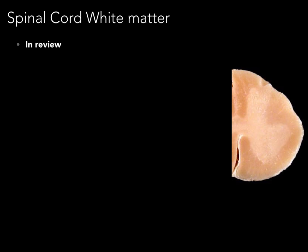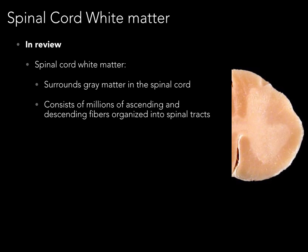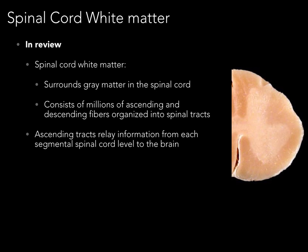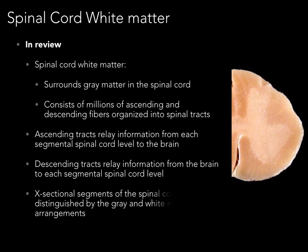In review: spinal cord white matter surrounds the gray matter in the spinal cord. It consists of millions of ascending and descending fibers organized into spinal tracts. Ascending tracts relay information from each segmental spinal cord level to the brain, and descending tracts relay information from the brain to each segmental spinal cord level. Cross-sectional segments of the spinal cord can be distinguished by their gray and white matter arrangements.